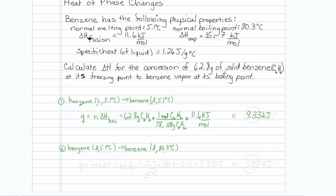The next step is liquid to liquid, but we're changing the temperature. So we use the formula q = msΔT. Our mass of benzene is 62.8 grams, the specific heat of benzene is 1.26 joules per gram degrees Celsius, and our temperature change is 80.3 minus 5.1 degrees Celsius. Multiplying all that out gives 5,950 joules, or converting to kilojoules, 5.95 kilojoules.